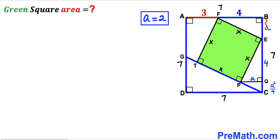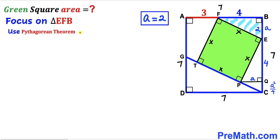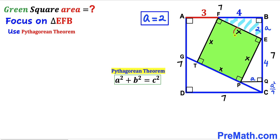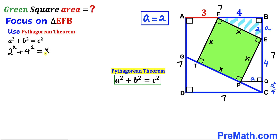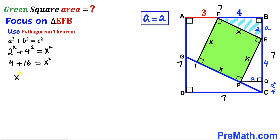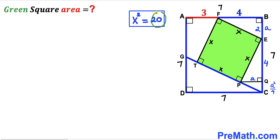Now let's apply the Pythagorean theorem to right triangle EFB. With hypotenuse X and legs 4 and a equals 2, we get: 2 squared plus 4 squared equals X squared. That is 4 plus 16 equals X squared, so X squared equals 20.